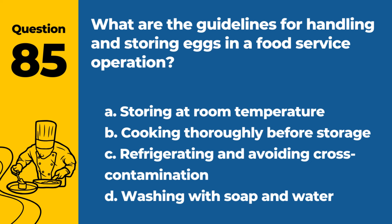Question 85. What are the guidelines for handling and storing eggs in a food service operation? a. Storing at room temperature. b. Cooking thoroughly before storage. c. Refrigerating and avoiding cross-contamination. d. Washing with soap and water. Answer: c. Refrigerating and avoiding cross-contamination. Proper storage and handling of eggs are important to prevent foodborne illness.